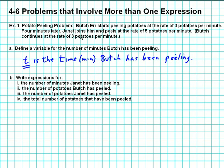So let's read the problem to see how long Janet has been peeling compared to how long Butch has been peeling. Butch starts peeling potatoes at the rate of three potatoes per minute. Four minutes later, Janet joins him. Here's the key.